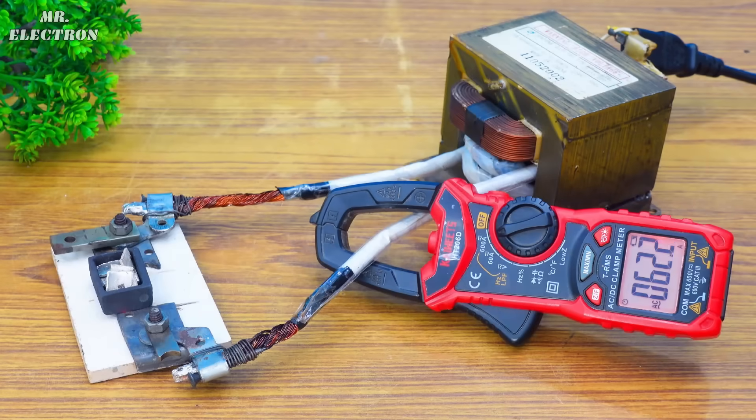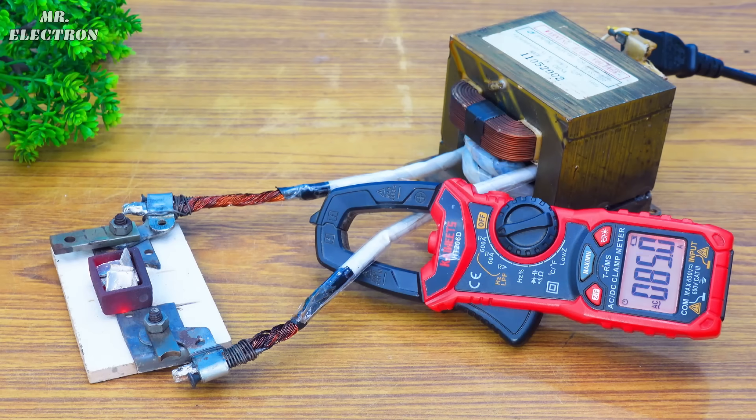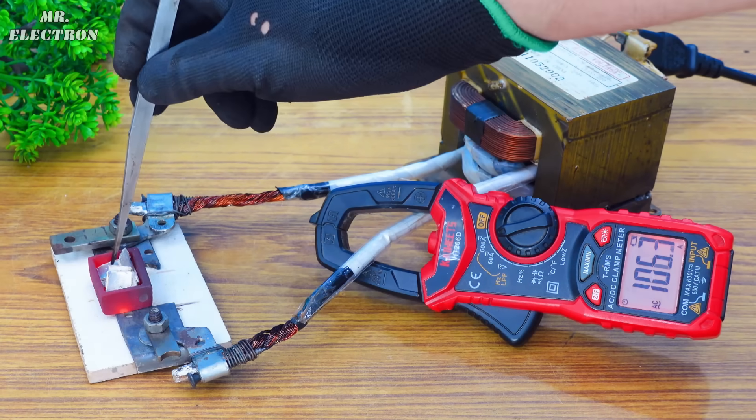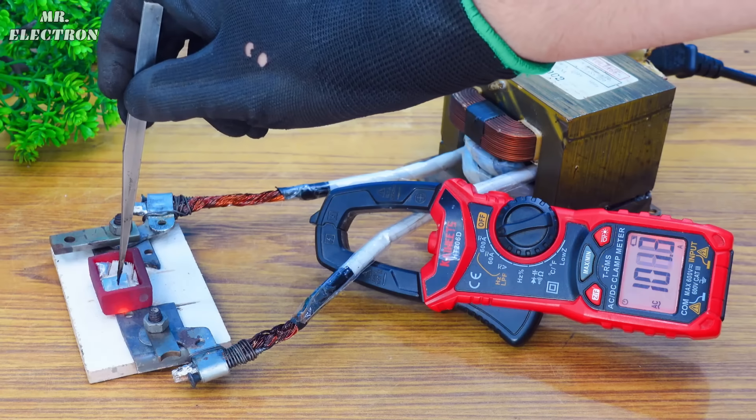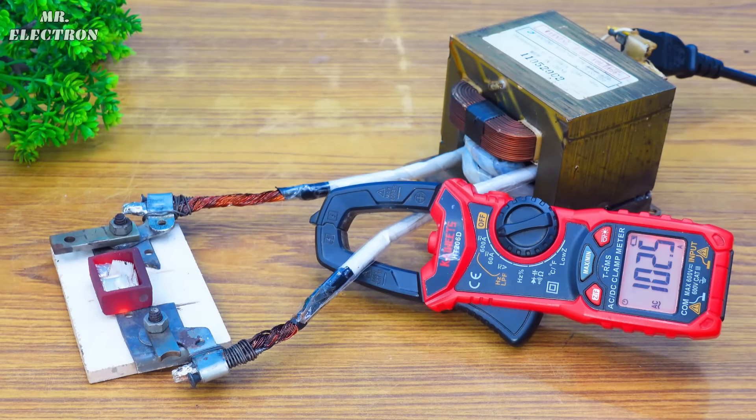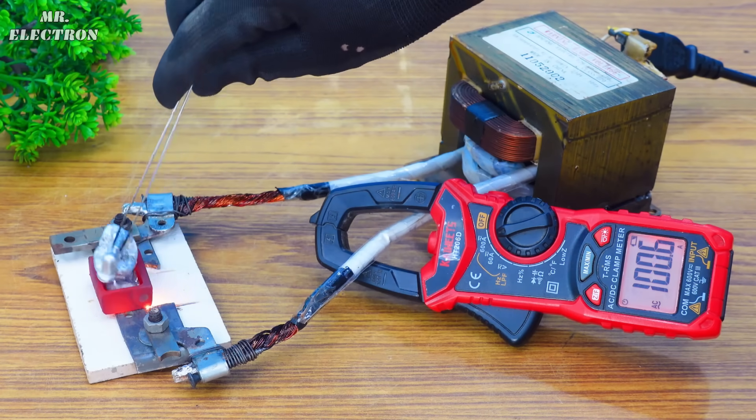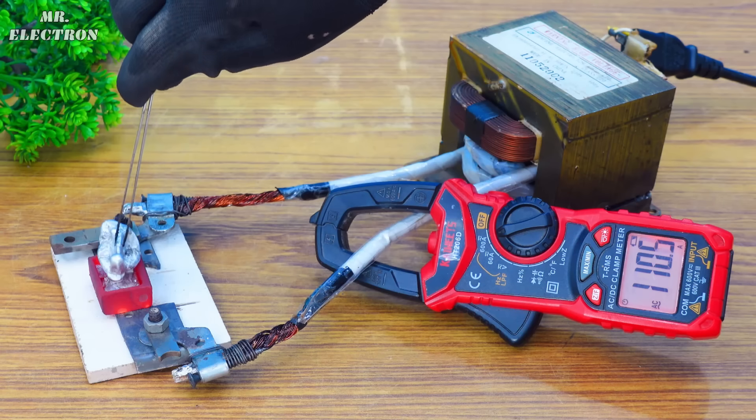At the same time I'm also measuring the amperes drawn. The drawn amperes as you can see are increasing and increasing and closing at around 100 plus. It has easily melted all the aluminum inside it. This is definitely a cheap replacement for an induction heating machine for casting purposes.